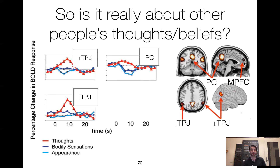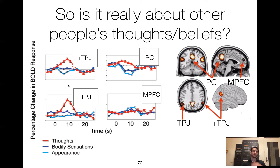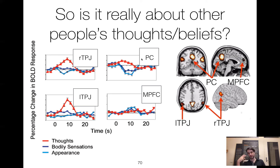The MPFC, however, this frontal lobe region, is doing a different pattern of responses. The thoughts condition is not really higher than the bodily sensations or appearance conditions. So we've bifurcated these brain regions into doing somewhat different things. The MPFC doesn't seem to be responding to thoughts in the same way that LTPJ, RTPJ, and precuneus are. Maybe the MPFC is involved in something like people overall — it cares about people, be it their bodily appearances, physical appearances, sensations, thoughts, and so forth. Whereas the other areas seem to play a bigger role specifically in other people's minds.